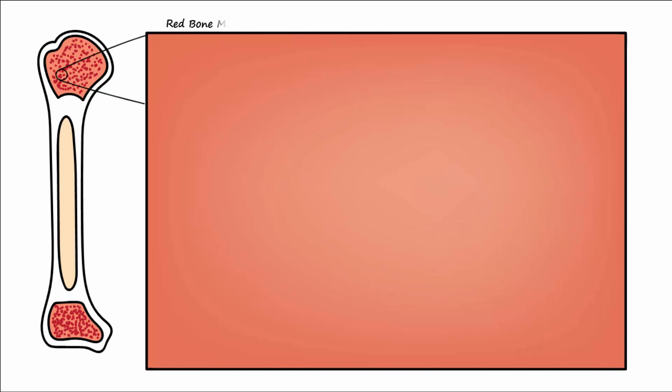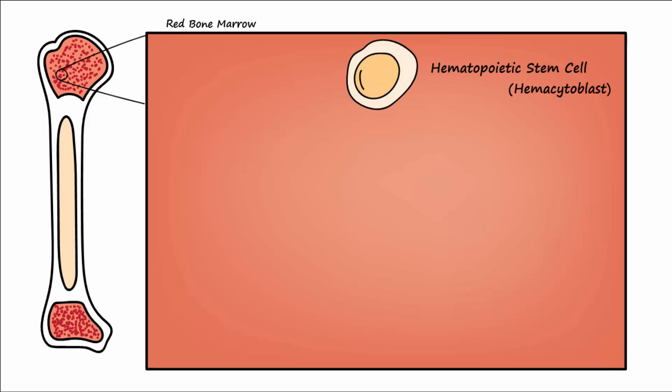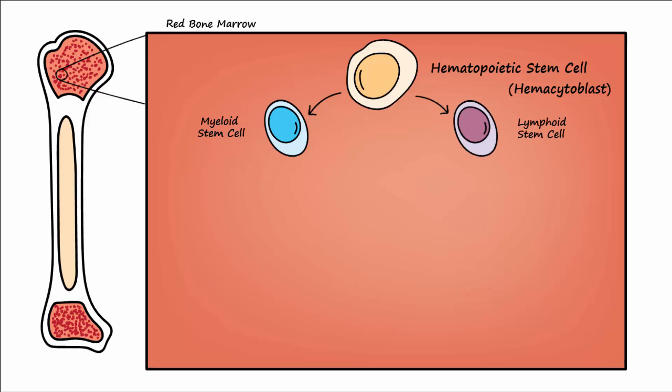Taking a look at the inside of red bone marrow, we would find hematopoietic stem cells differentiating into either myeloid stem cells or lymphoid stem cells. Each of these stem cells then goes on to divide into different types of blood cells.